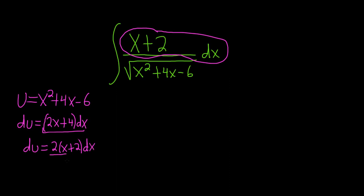Okay, so then you just divide both sides by 2. And so we have 1 half du, and that's equal to x plus 2 dx.